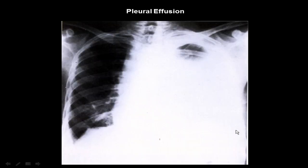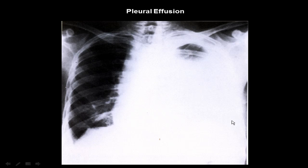A massive pleural effusion on the left side — obliterating and compressing the whole lung; only the apex of the left lung is clearly demarcated — with shifting of the mediastinum, which is the heart and the trachea, to the other side, and obliteration of the costophrenic angle. Of course it's a massive effusion on the left side.